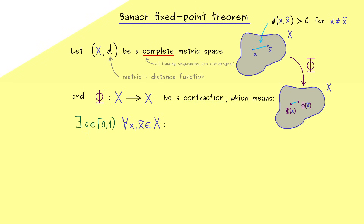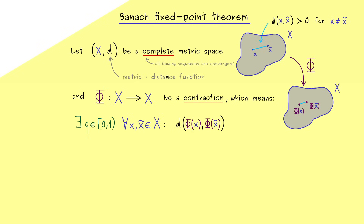More precisely, for all possible inputs x and x̃ we measure the distance of the images φ(x) and φ(x̃), and this should be less than or equal to q times the original distance d(x, x̃). This is the correct definition of a contraction. It's stronger than just saying the distance gets smaller and smaller because we have a fixed scaling constant q, and this is crucial — it guarantees we can find a fixed point.